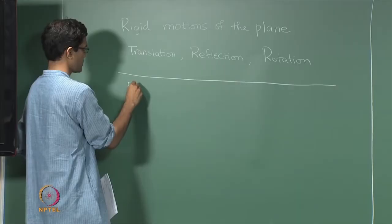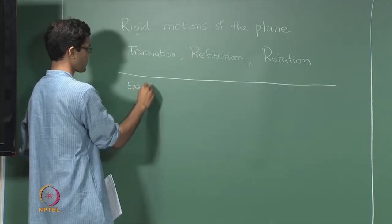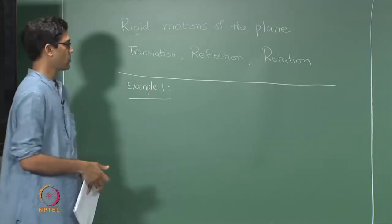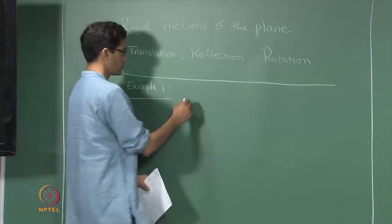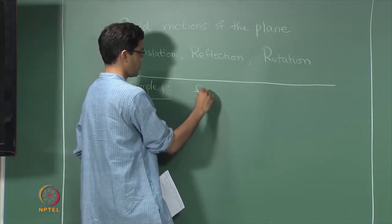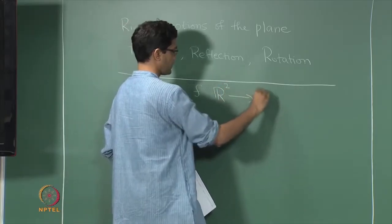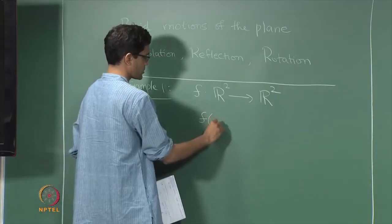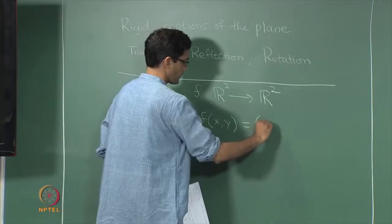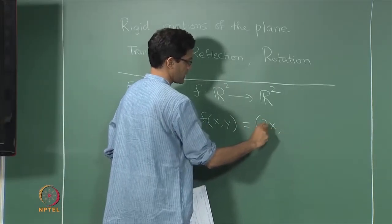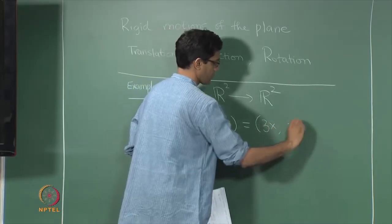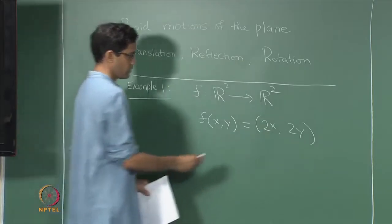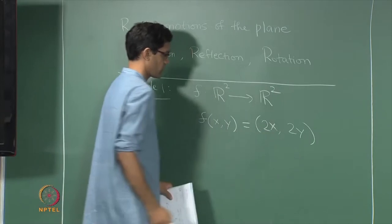We now look at things which do not preserve lengths or angles in general. The first example will be the following map — we are looking at maps from the plane to the plane. Let us define f to be the function which takes the point (x, y) on the plane to the point (2x, 2y), which is again a point on the plane, and let us try and study what this function does.